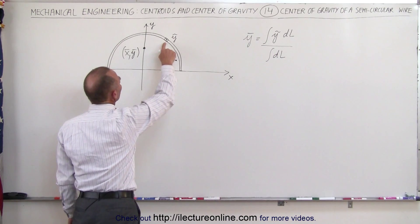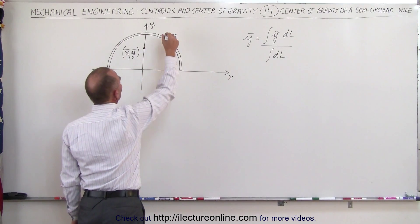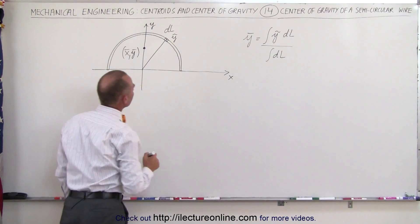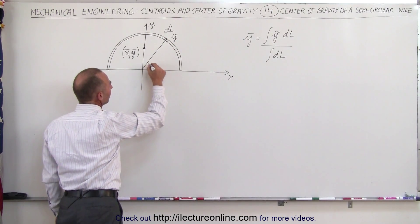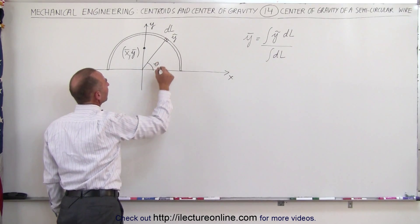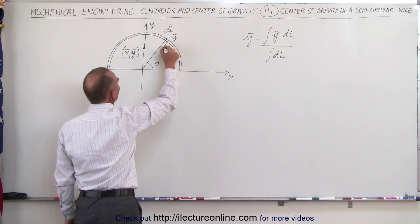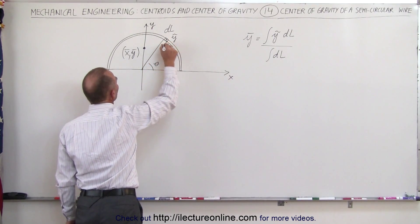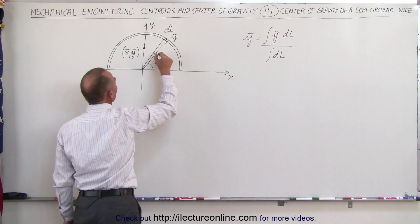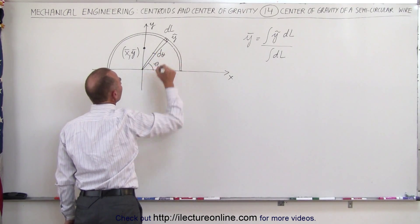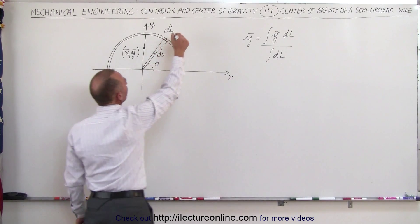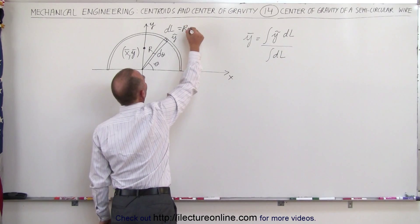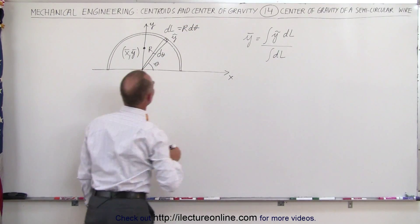What is the y-position of that particular little segment? That's a small little dl. If we draw a line from the center out to that segment, we make an angle — we call that angle theta. Drawing lines on either side of the segment, that small arc spans d theta. Then dl can be written as r times d theta, where r is the radius of the wire.